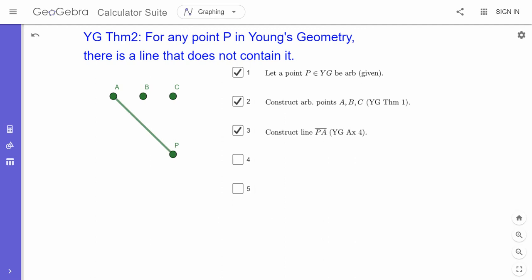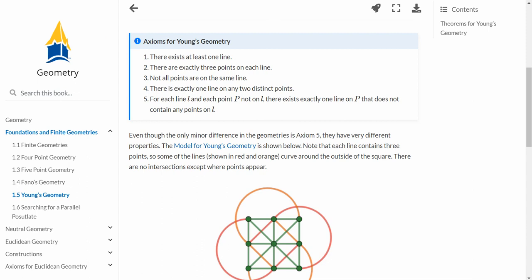Now I'm going to construct a line between the points P and A. Now, why can I do that? Well, that's axiom 4. Let's actually switch over to Young's Geometry and look. It says that on any two distinct points, there's exactly one line, okay?